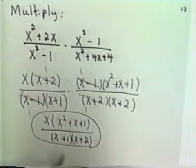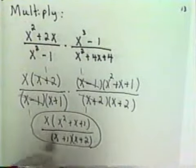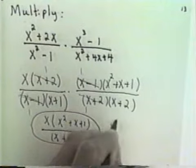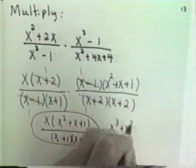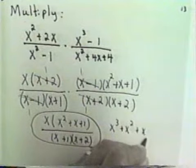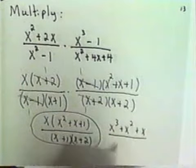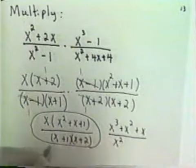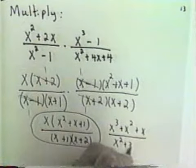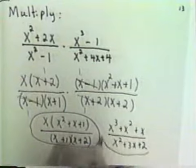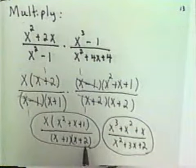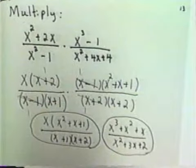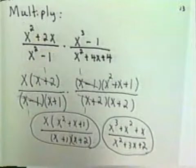Now you could write the answer if you wanted to. If you wanted to actually do the multiplication and write x cubed plus x squared plus x over x squared plus 3x plus 2, you could do that — using the full method on the denominator and the distributive property on the first one. But you're not required to. This answer is just as good.